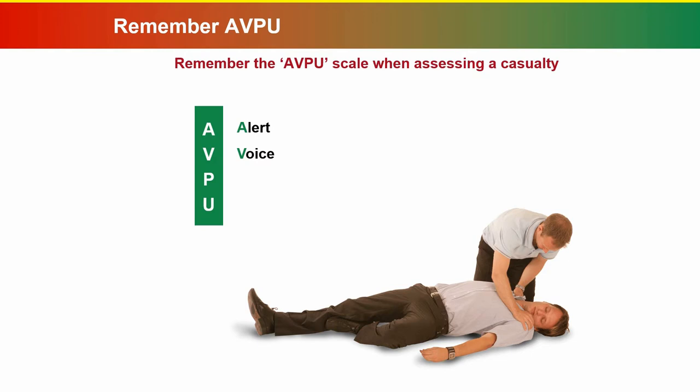If no response to voice, proceed to P. Place your hand on the casualty's shoulders and gently shake them. Ask loudly, 'Are you all right?' If there is no response, then proceed to U — Unresponsive. Assume the casualty is unresponsive.